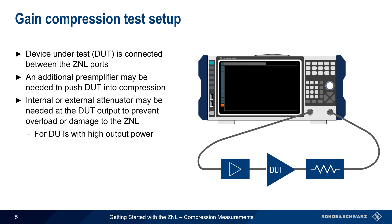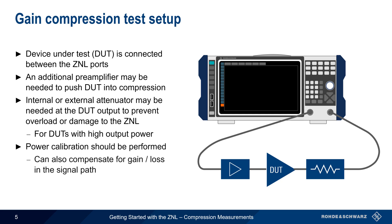As mentioned a few moments ago, a power calibration should be performed before making gain compression measurements. In addition to improving measurement results, this calibration can compensate for gain or loss in the signal path, such as that caused by preamplifiers, attenuators, etc.